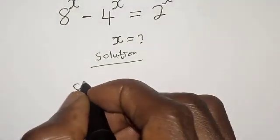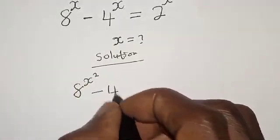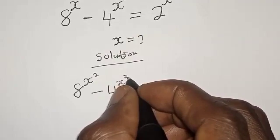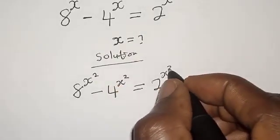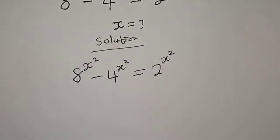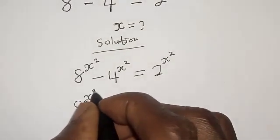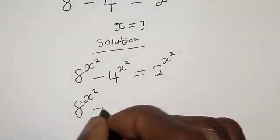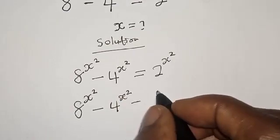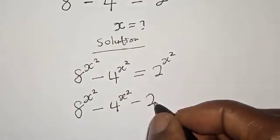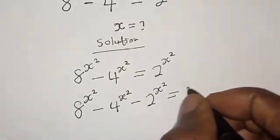8 raised to power s squared minus 4 raised to power s squared is equal to 2 raised to power s squared. Then, this is the same thing as 8 raised to power s squared minus 4 raised to power s squared minus 2 raised to power s squared is equal to 0.